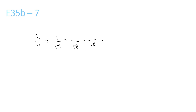9 and 18. The number that they both go into, which is lowest, is 18. 9 times 2 is 18, so that means we have to times the top by 2. 2 times 2 is 4. The 1 stays the same. And do 4 plus 1 is 5 over 18.